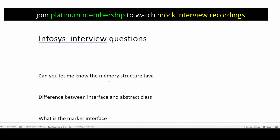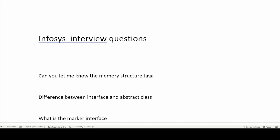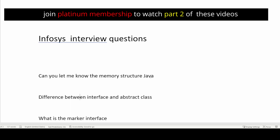The first question is: can you tell me the memory structure in Java? If you talk about memory structure in Java, there are two main areas in JVM memory — one is heap and one is stack. Whenever you create any primitive data types, it will be stored inside the stack memory. Whenever you create any object, it will be stored inside the heap memory. There are other details as well inside the heap memory area, like multiple spaces such as Eden space, first generation space, and last generation space.